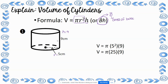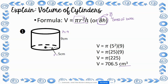Following order of operations, we multiply exponents first: 5 to the second power is 25. Then we multiply pi times 25 times 9. One way to do this is to multiply 25 and 9 first, which is 225, then multiply by pi. 225 times pi gives 706.5 centimeters cubed. Volume is always measured in cubic units because we fill with cubes.